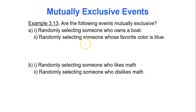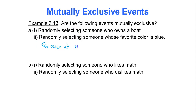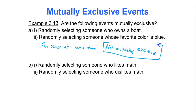Here's an example: are these two events mutually exclusive? Randomly selecting someone who owns a boat, and randomly selecting someone whose favorite color is blue. Can I pick one person who both owns a boat and whose favorite color is blue? The answer is yes — they can occur at the same time, so they are not mutually exclusive.